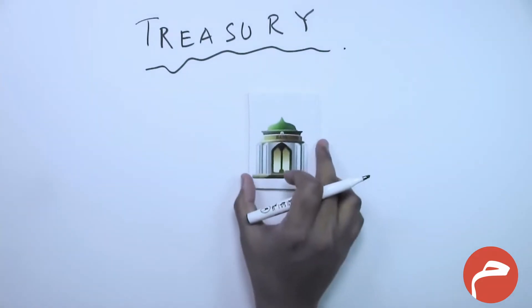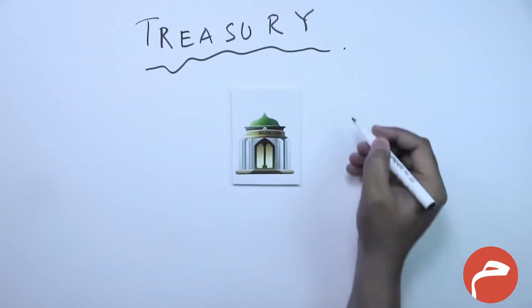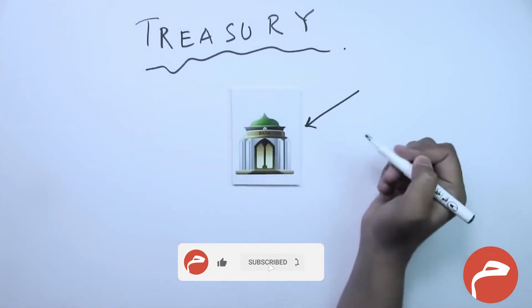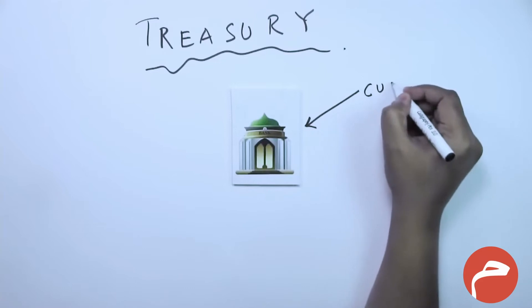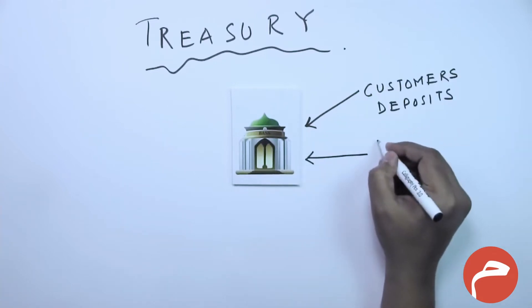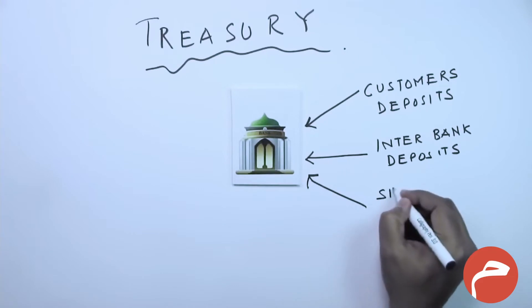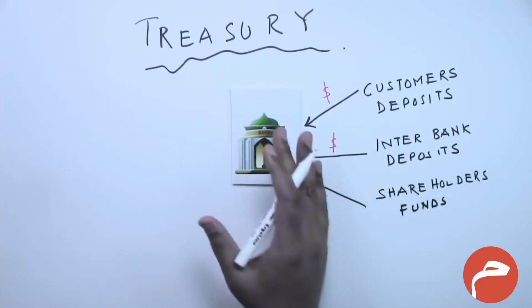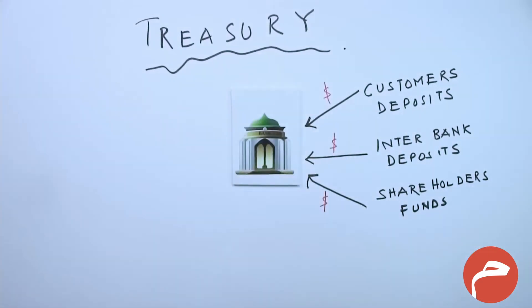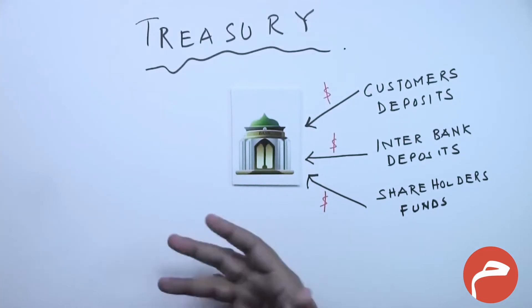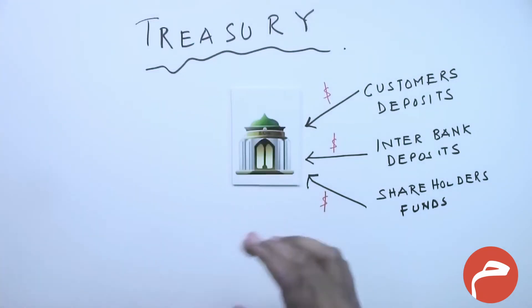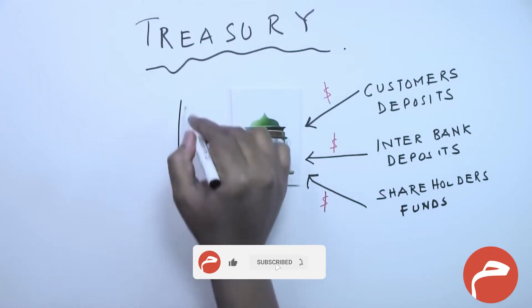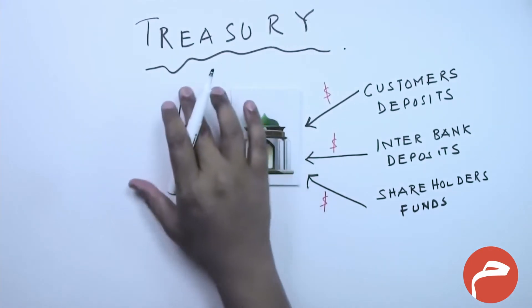In this lesson, let us discuss about Treasury. Let us take an Islamic bank. An Islamic bank receives liquidity generally from three sources: one is customer deposits, the other is interbank deposits, and the third is from shareholders' fund. From these three sources, a bank receives liquidity — meaning cash. Once the bank receives the cash, it needs to be placed and invested to generate profit. The department which manages this and becomes the center point where the funds get collected is the Treasury Department.